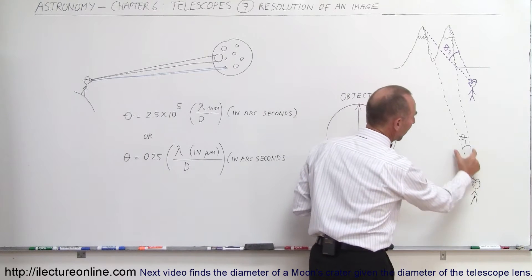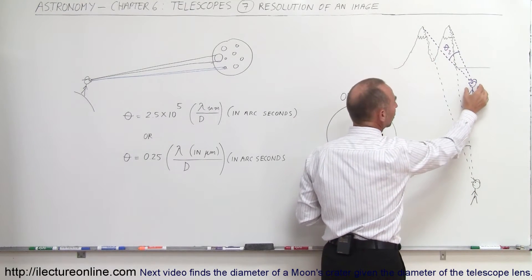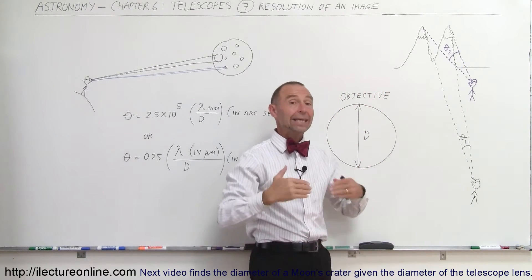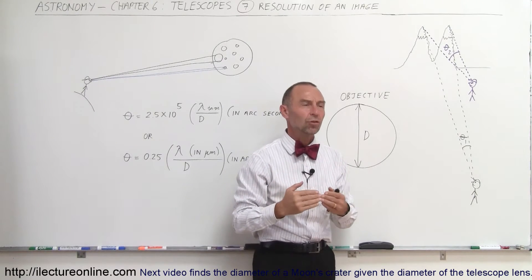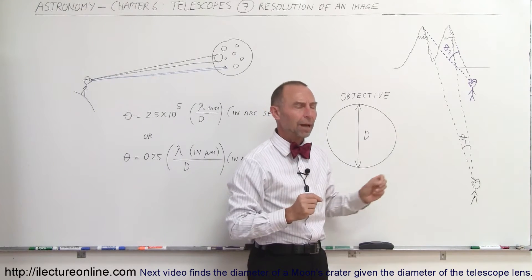So here you can see that when you're farther away, the angle between the two mountains is smaller. And when you get closer, the angle between the two mountains gets bigger. The bigger the angle, the easier it is to resolve. The smaller the angle, the more difficult it is to resolve. And bigger telescopes are able to resolve even when the angles are small. And that's what it's all about.